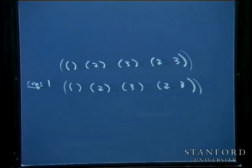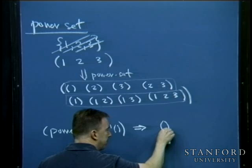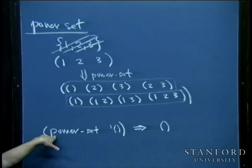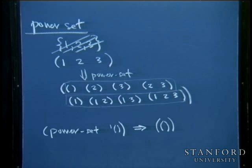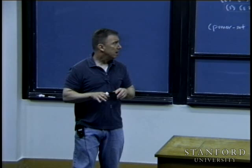The power set of the empty list is not the empty list — that would mean there are no subsets of the empty set, which is false. The empty set is its own (improper) subset. So the power set function, given the empty list, should return a list containing only the empty set. The lengths of these lists are always a perfect power of two: two-to-the-zero for the empty set, two-to-the-third for a three-element set.